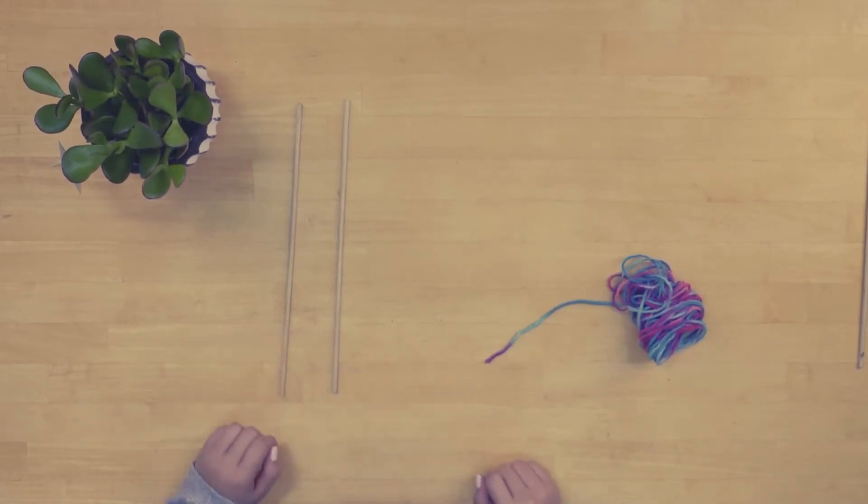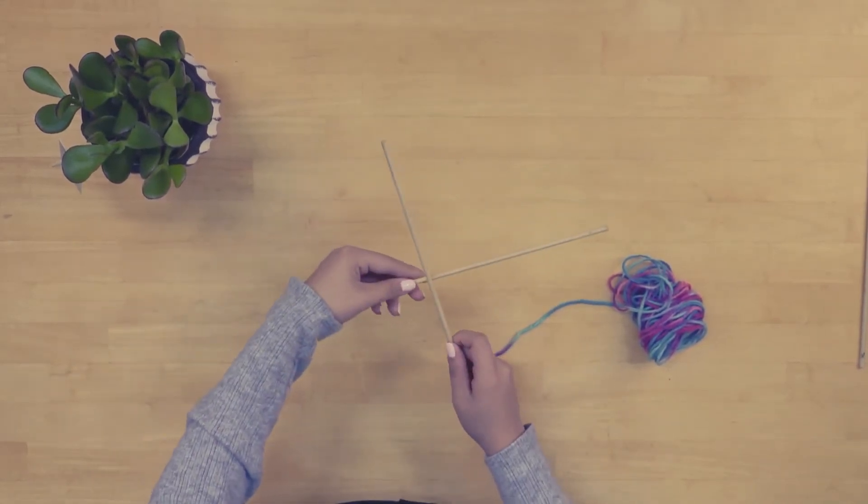To make the yarn star, we first put one dowel on top of another, like this, to create a cross.